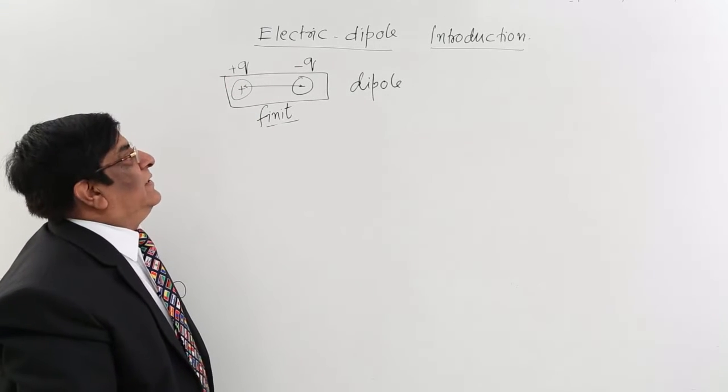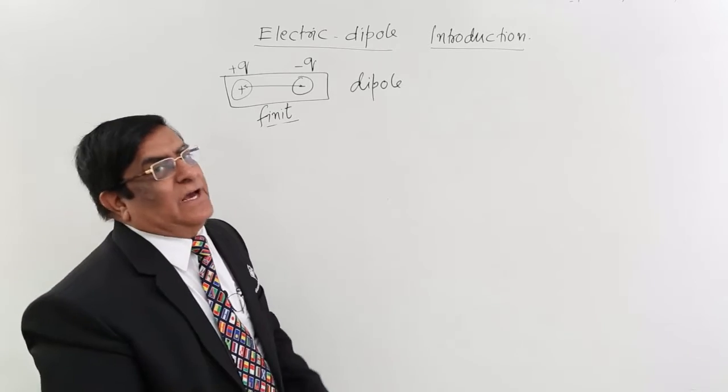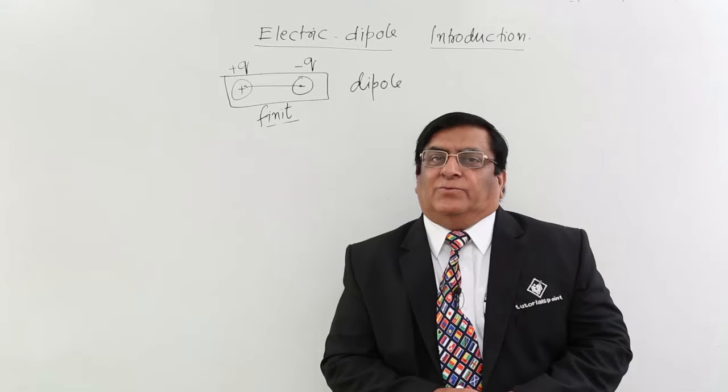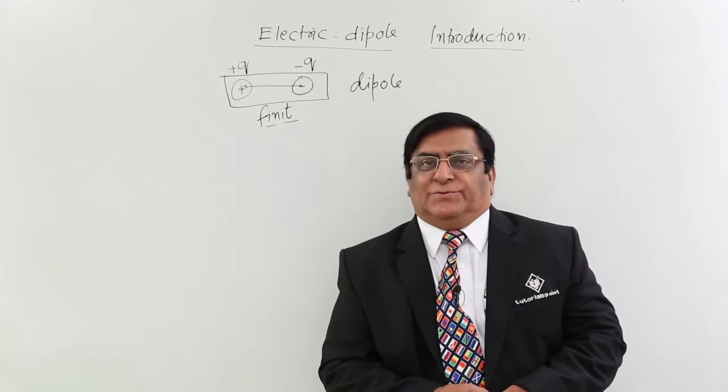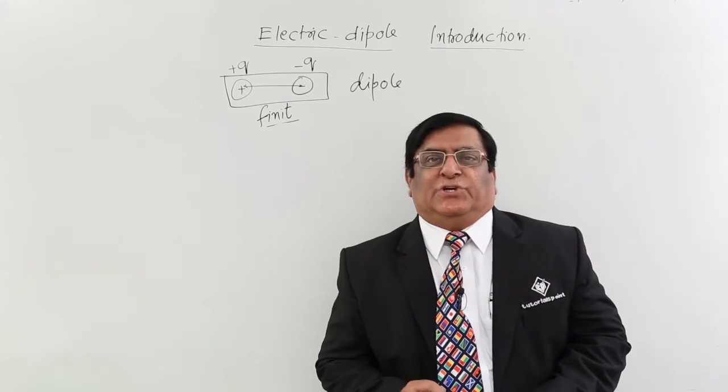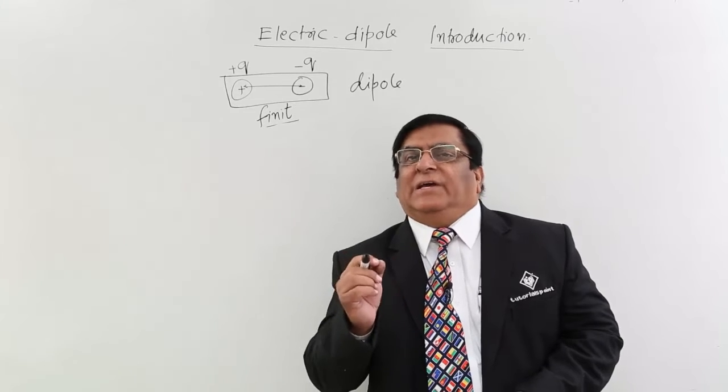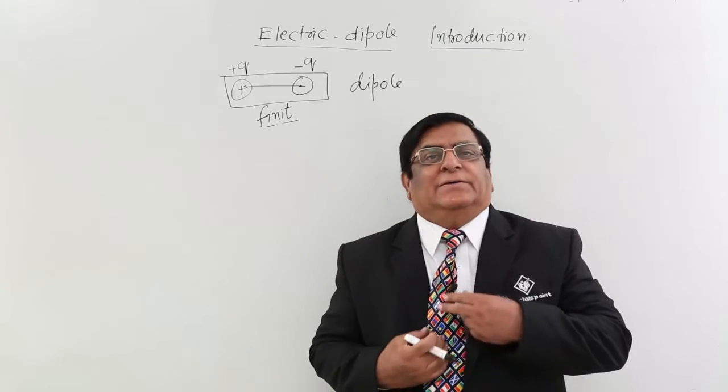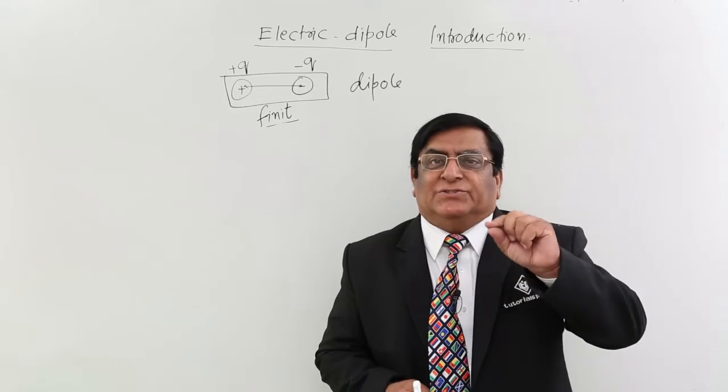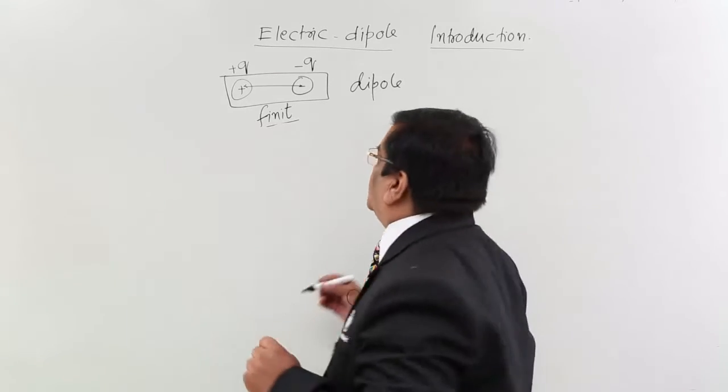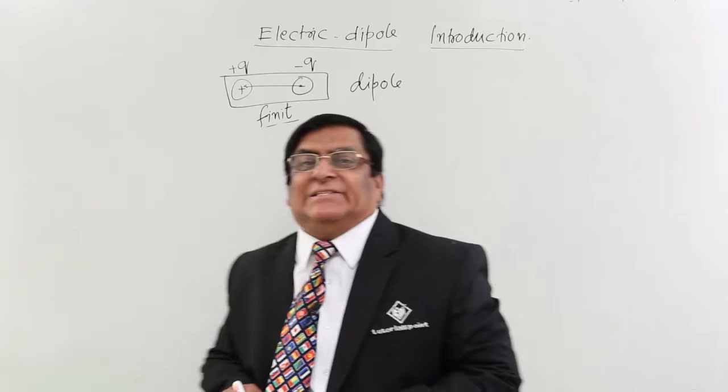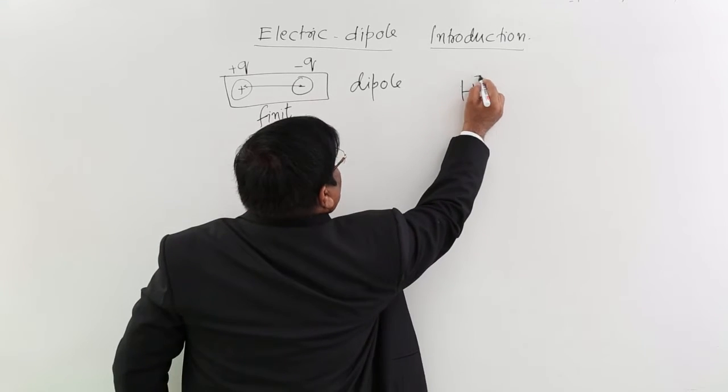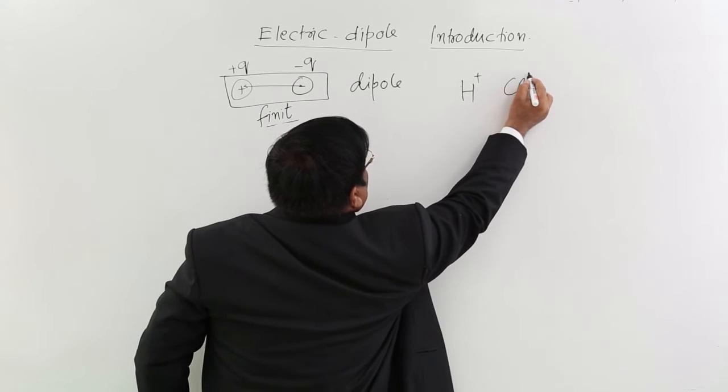Where do we see these dipoles? The answer is in our compounds, chemical compounds. We have a positively charged particle and a negatively charged particle which are bound together. Like the acid HCl—in that, H is positive and Cl is negative.